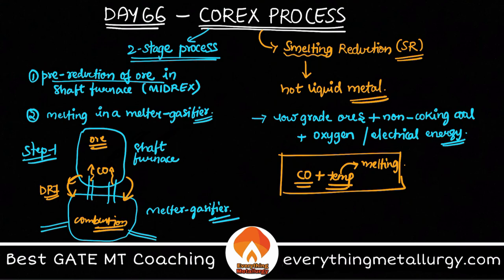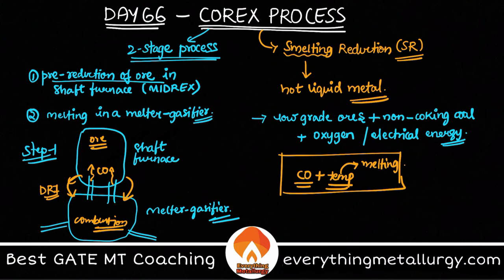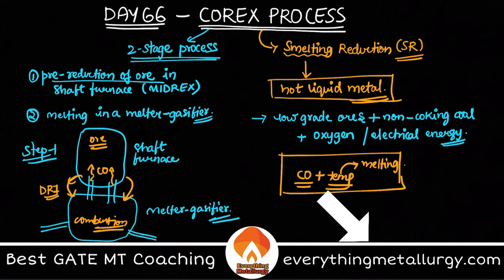The top gas from the shaft furnace also has a good calorific value and can be used as fuel for other operations. Now, the key differences between blast furnace and COREX: in the blast furnace you use lump iron ores, sinter, or pellets, whereas in COREX you can also use low-grade ores. In the blast furnace you use expensive coke, whereas COREX uses non-coking coal and pure oxygen instead of hot blast. The output is similar — hot metal — but in blast furnace it goes to a BOF (basic oxygen furnace) steelmaking route, whereas in COREX it is usually taken to the EAF (electric arc furnace) route.